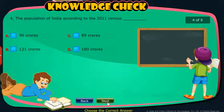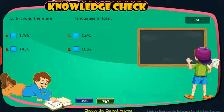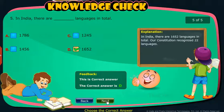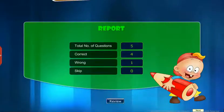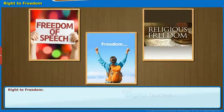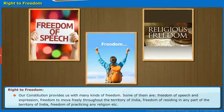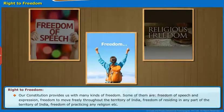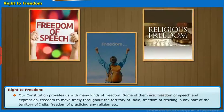We will look at the right to freedom provided by the Indian Constitution in brief. Our Constitution provides us with many kinds of freedom, some of them are: freedom of speech and expression, freedom to move freely throughout the territory of India, freedom of residing in any part of the territory of India, freedom of practicing any religion, etc.